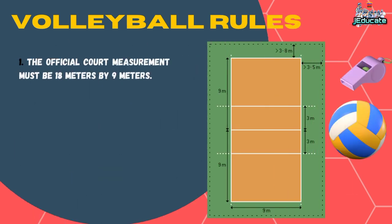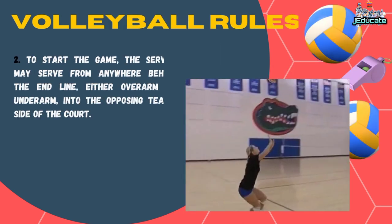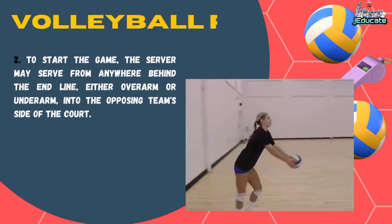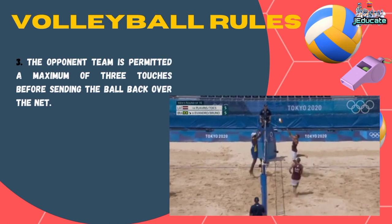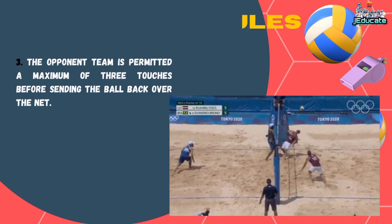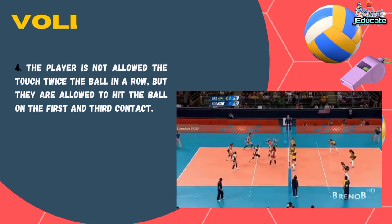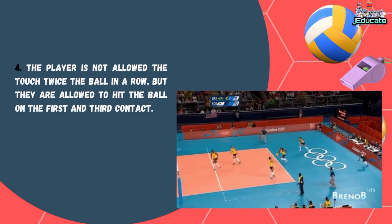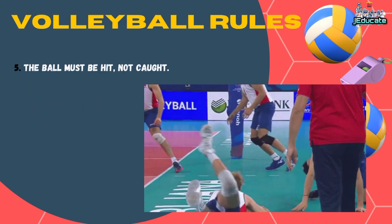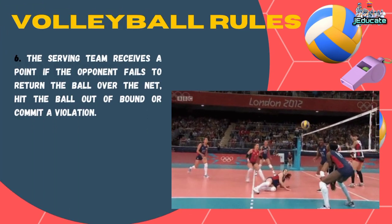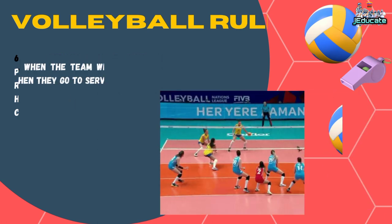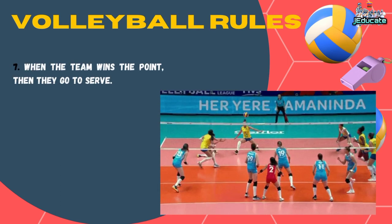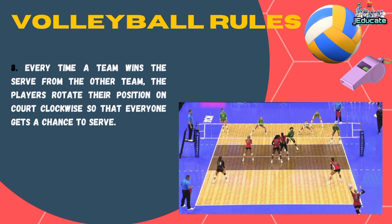Number 1, the official court measurement must be 18 meters by 9 meters. Number 2, to start the game, the server may serve from anywhere behind the end line, either overarm or underarm, into the opposing team's side of the court. Number 3, the opponent team is permitted a maximum of three touches before sending the ball back over the net. Number 4, the player is not allowed to touch the ball twice in a row, but they are allowed to hit the ball on the first and third contact. Number 5, the ball must be hit, not caught. Number 6, the serving team receives a point if the opponent fails to return the ball over the net, hits the ball out of bounds, or commits a violation. Number 7, when the team wins the point, then they go to serve. Number 8, every time a team wins the serve from the other team, the players rotate their position on court clockwise so that everyone gets a chance to serve.